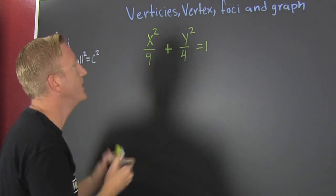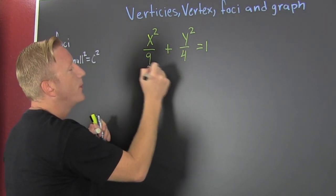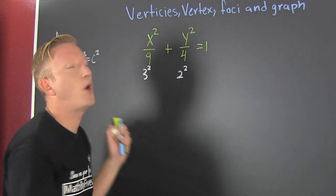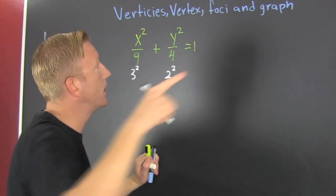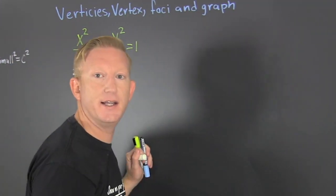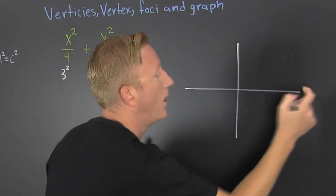I'm talking about this is three squared, that's two squared. Why do we need this? If we're gonna graph this ellipse, then we're gonna go boom boom.